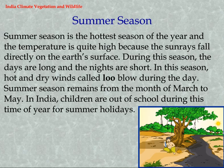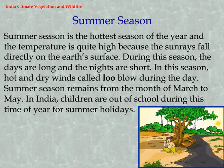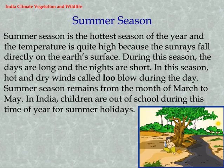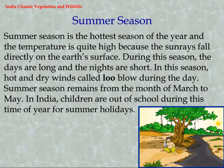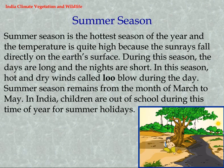Summer Season: Summer is the hottest season of the year and the temperature is quite high because the sun rays fall directly on the Earth's surface. During this season, the days are long and the nights are short. Hot and dry winds called loo blow during the day. Summer season remains from the month of March to May.